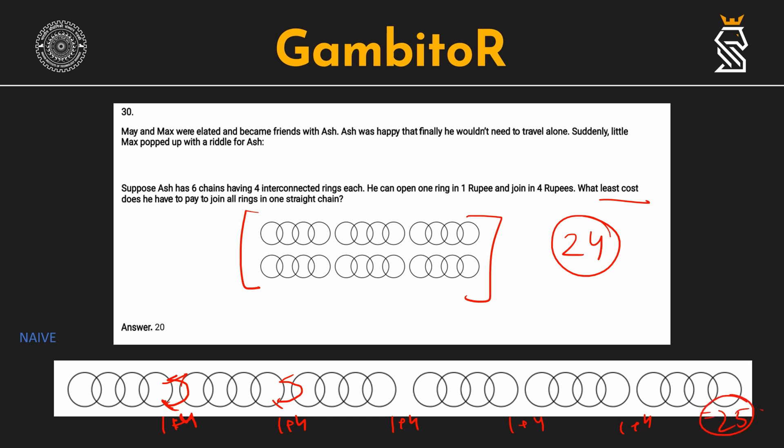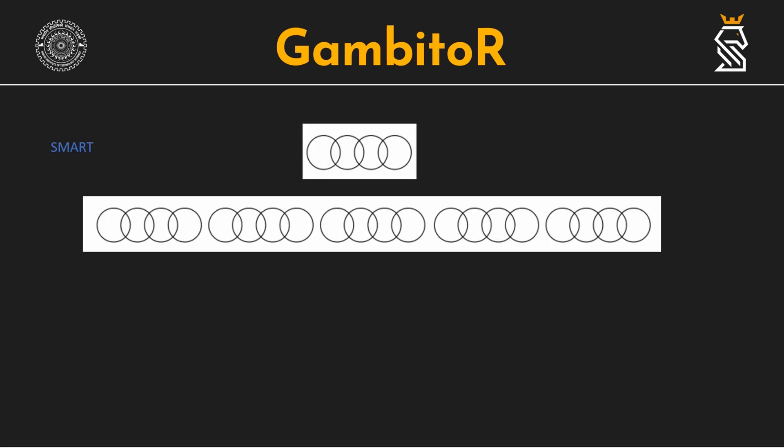However, this is not the least cost that we have to pay. We can decrease this by a smarter approach in which we will open all the rings of a single chain. In doing so, it will cost 1 times 4 equals 4 rupees and we would be having 4 chains opened.